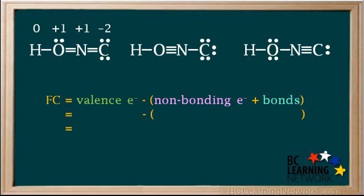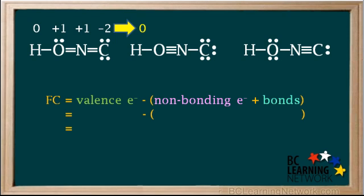At this point, we always check to make sure the formal charges add up to the total charge on the molecule or ion. Since this is a neutral molecule, its total charge is zero. And we can see that the formal charges, plus one, plus one, and minus two, do indeed add up to zero. So we're okay here.